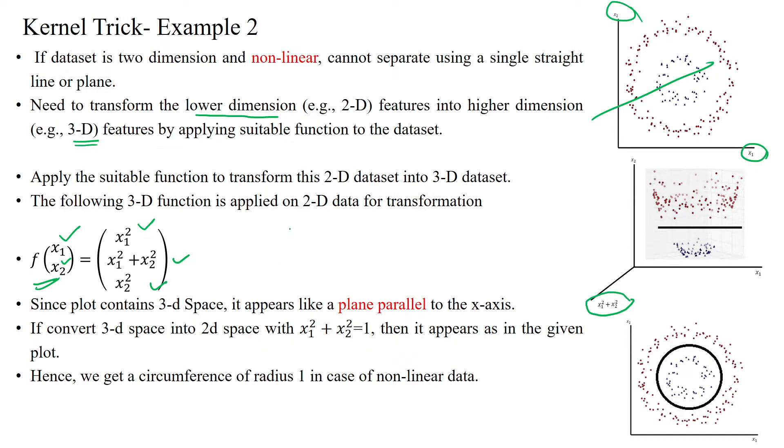Now we are having five-dimensional. Now we are having five features in our given data set. We can get three-dimensional space. It will appear as a plane parallel to the x-axis. Plane parallel to the x-axis.